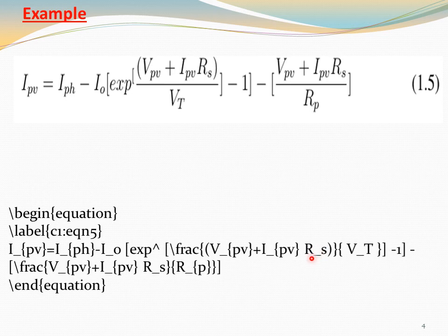Then \frac with V_{pv} + I_{pv} R_s in the numerator over V_T in the denominator. Close the numerator part, then the denominator part, then close the square bracket.